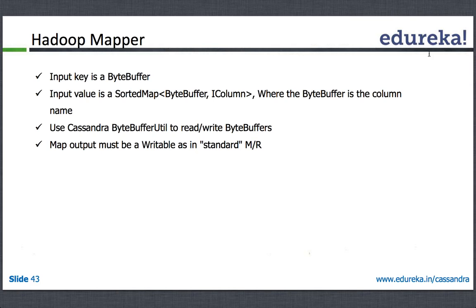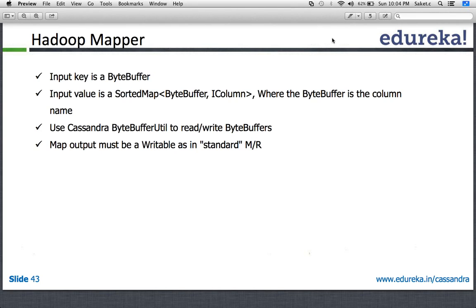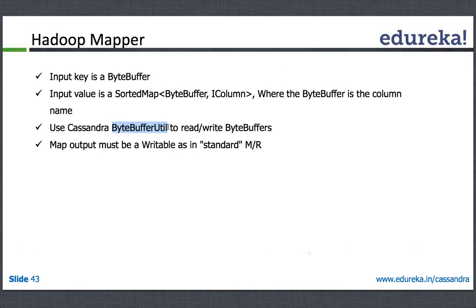Using the Cassandra ByteBufferUtil — there's a ByteBufferUtil class that Cassandra provides — you can effectively read and write byte buffers in Cassandra. Cassandra basically uses the Java NIO library, so a lot of use of byte buffers is done by Cassandra. If you are not familiar with the NIO API, this utility lets you convert bytes into strings and strings back into bytes while using Cassandra.